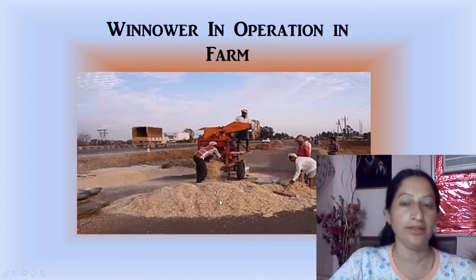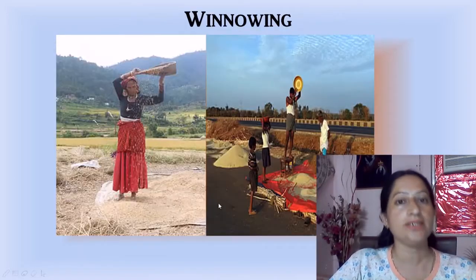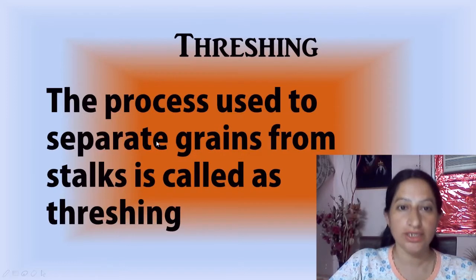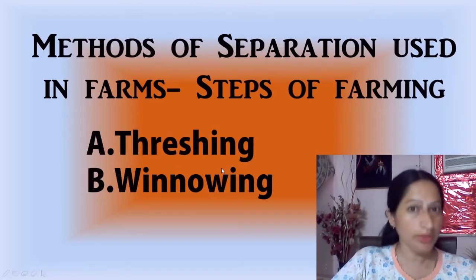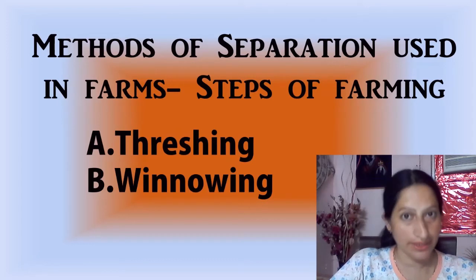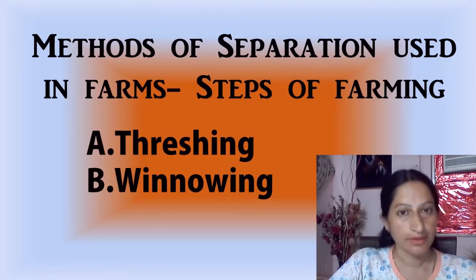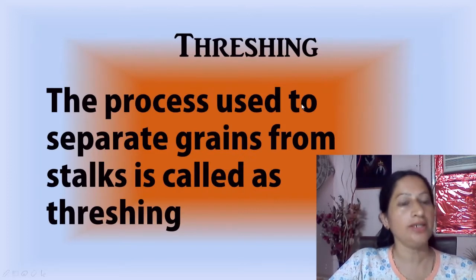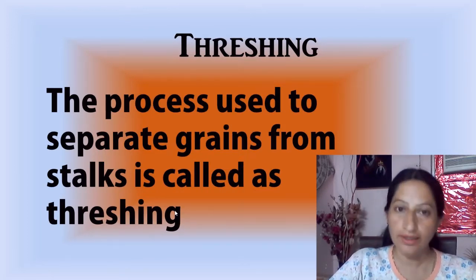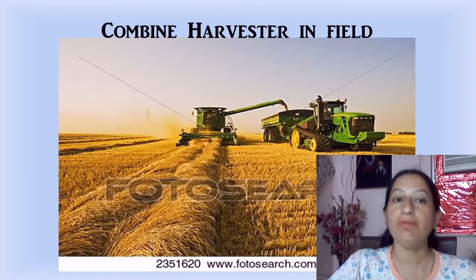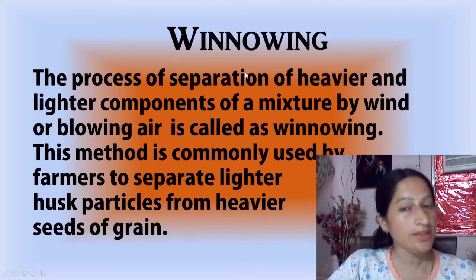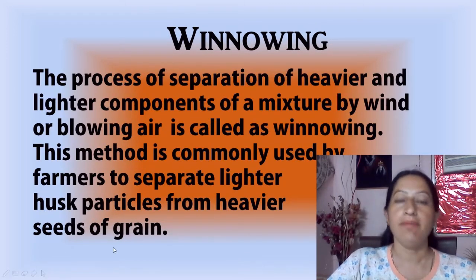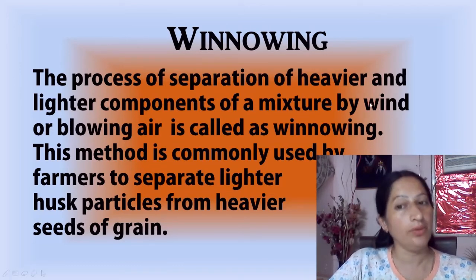Now let's understand the difference between threshing and winnowing. Threshing is the separation of the grains from stalks. Winnowing is the process of separation of husk particles from the heavier seeds of grain. That is one basic difference. Secondly, winnowing uses wind — we allow the wind to separate the husk from the grains.